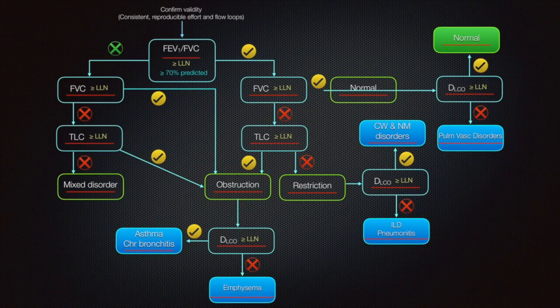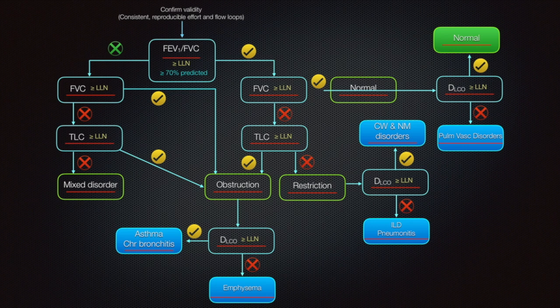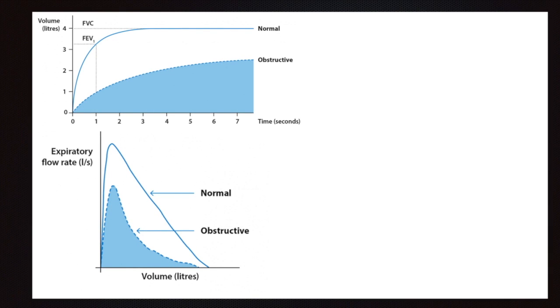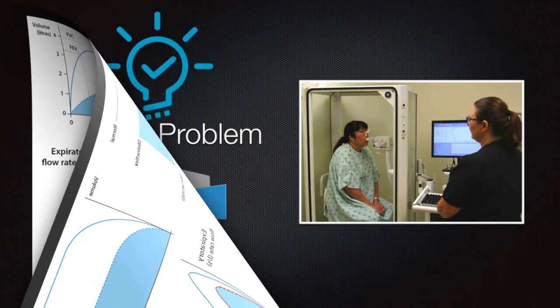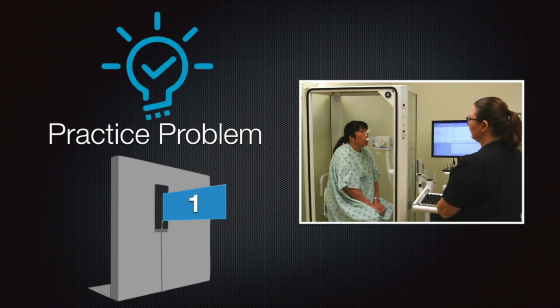I believe now things are clear, this is the complete flowchart. As we practice with clinical scenarios, you will find it clearer. It is also advised to be familiar with the flow rate tracings, value ranges, and shape both in obstructive and restrictive pathologies. Here comes our first practice problem.